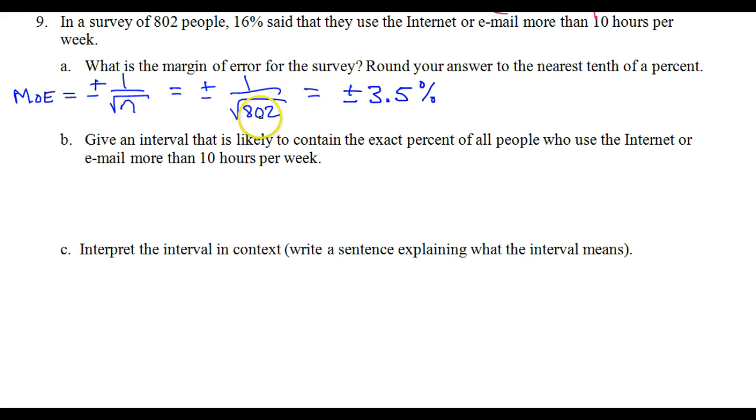That's the margin of error for this sample size. Now, give an interval that is likely to contain the exact percent of all the people who use the internet or email more than 10 hours per week. For the sample, it was 16%. The margin of error tells us how far above or below that we have to go to make sure that the true answer for the entire population will be within that interval. Here's where the plus or minus 3.5% comes in.